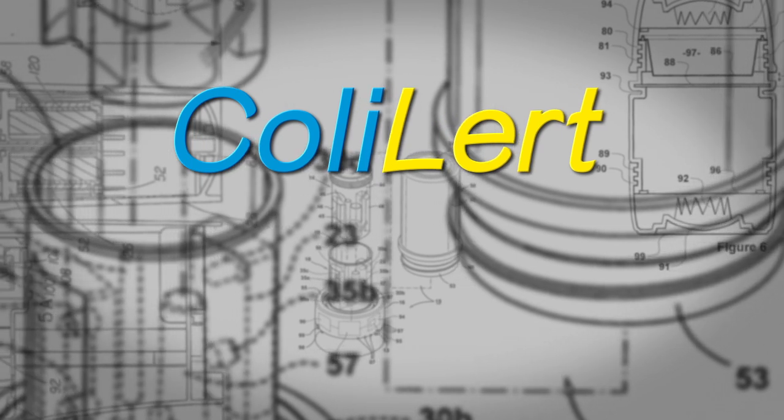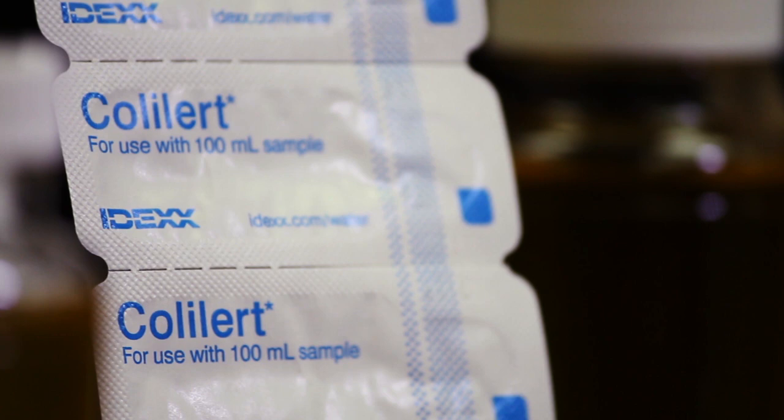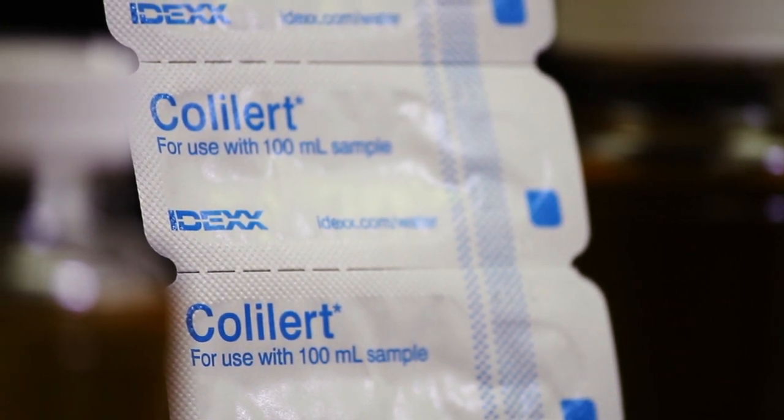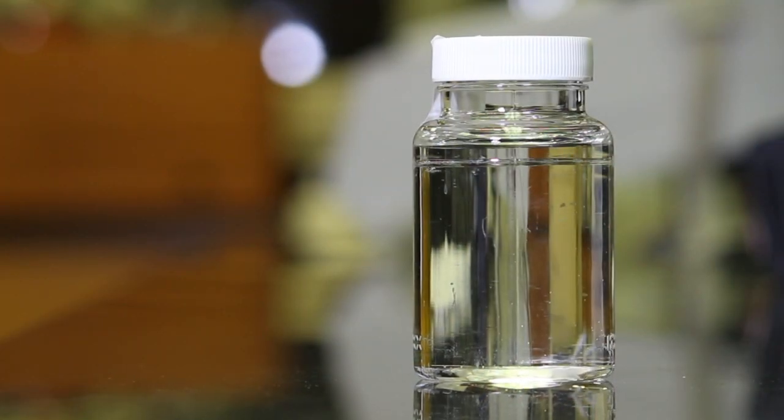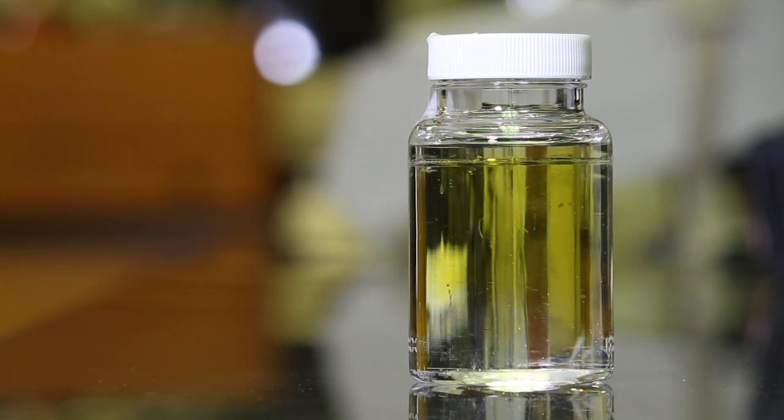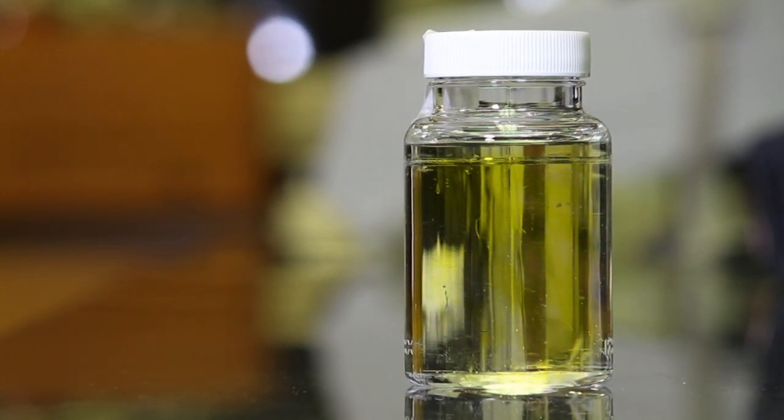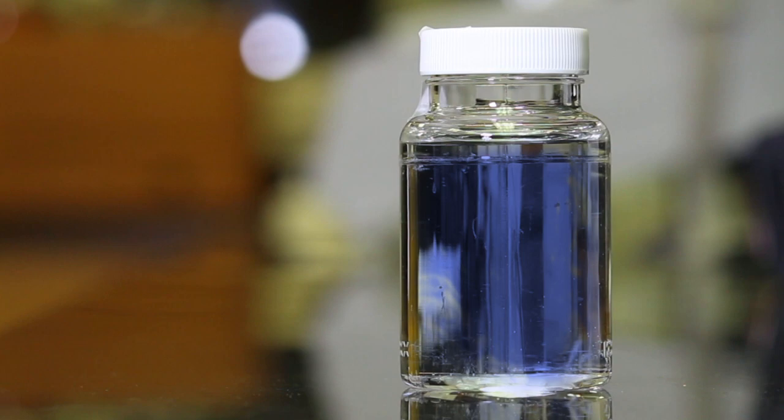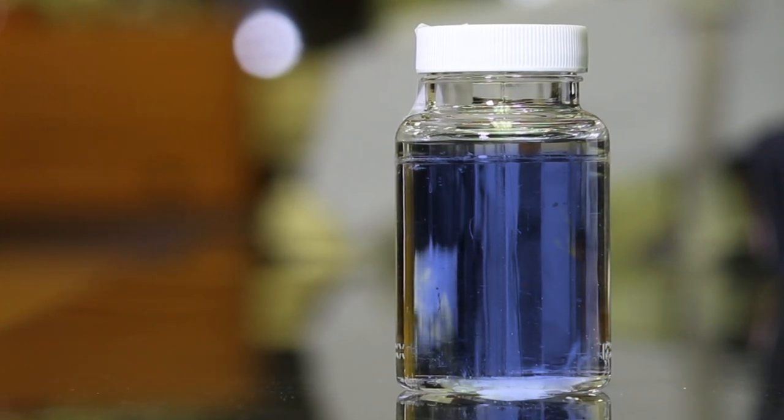Colalert is the newest of these three methods and has been used to determine the safety of water supplies for over 20 years. In this simple method, we look for color changes in our test vial to determine if total coliforms and/or E. coli are present in a water sample.